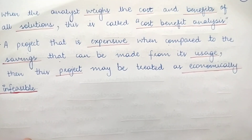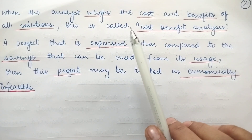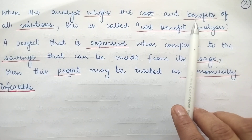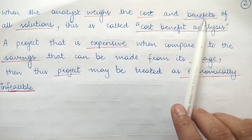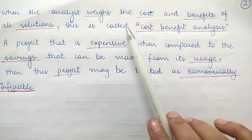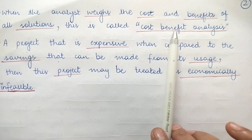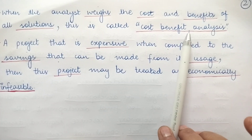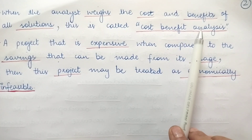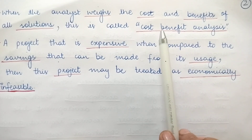When the analyst weighs the cost and benefits of all solutions that a particular project is providing, the analyst analyzes all the costs incurred for those solutions and all the benefits gained from those solutions. This analysis is called the cost-benefit analysis, wherein the analyst tries to determine whether the cost incurred in the project will be more or the benefits achieved will be more. The aim is to have a project whose benefits outweigh its costs.